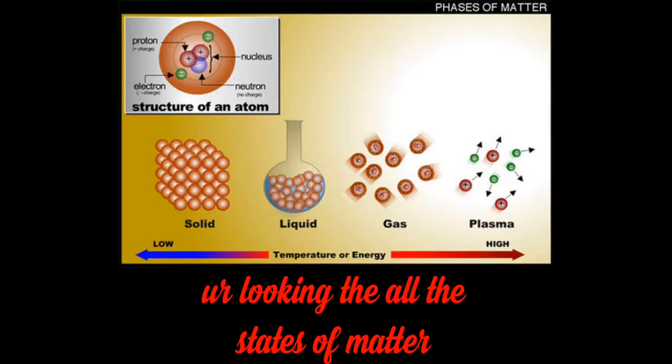From this figure, we can clearly say that when we start decreasing the temperature, it becomes solid. Not all times, only sometimes. When we start increasing temperature of matter, then it becomes liquid, gaseous, and after that plasma.